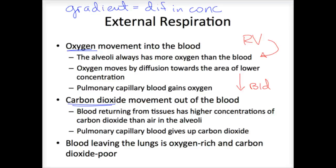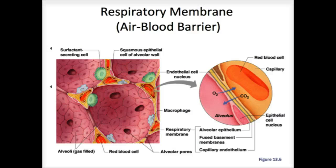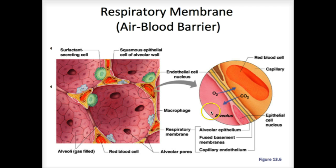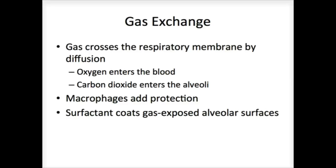This is what allows the blood to arrive oxygen-poor and leave oxygen-rich. It also allows it to arrive heavy in CO2 and leave with much less CO2. This is all because of this thin tissue between the blood completely surrounding the alveolar sacs — you can see how the blood is literally surrounding these alveolar sacs, and we get that exchange across the tissue. Diffusion is what drives everything — that difference in concentration.